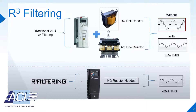Let's now dive a little deeper into R-cubed filtering. Traditionally, with other VFDs, there is a DC-Link reactor or AC-Line reactor to mitigate harmonics. We want to mitigate harmonics because they are wasted energy, cause excess heat, and can cause equipment to malfunction. When the DC-Link reactor or AC-Line reactor is used, there is 35% harmonic distortion. The Q-Link has built-in technology called R-cubed filtering, which is a sophisticated filtering algorithm that mitigates harmonics the same way as the DC-Link or AC-Line reactor, except it gives less than 35% total harmonic distortion without an external reactor. R-cubed filtering can be thought of as having a 3-5% line reactor built right into the drive.